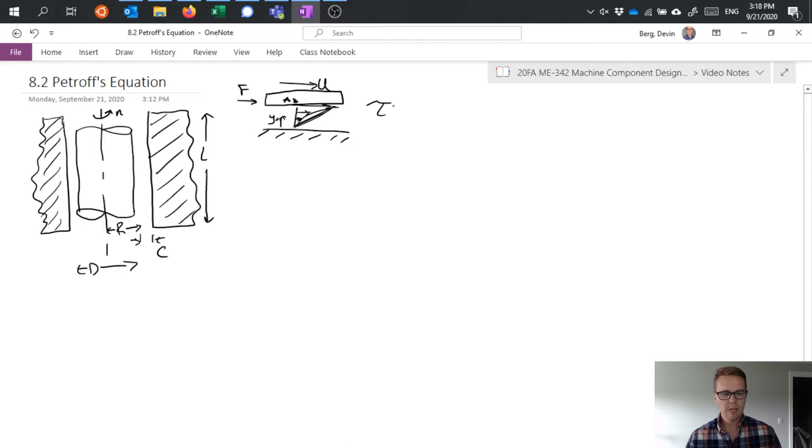Generally speaking we could then figure out what our stress is induced as a result by saying well we have some force over some area and it's got to be equal to a viscous stress times the change in velocity.